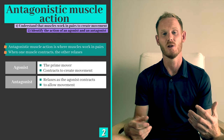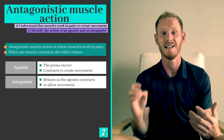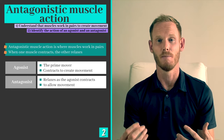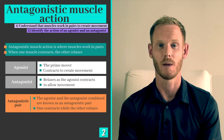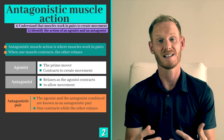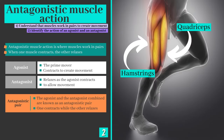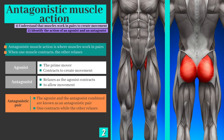Each muscle in a pair is named depending on its role at any given moment. The agonist or prime mover is the muscle that contracts to create movement — this is the one doing the work. Meanwhile the antagonist relaxes so that its length can increase and movement can occur at the joint. The agonist and antagonist combined are known as an antagonistic pair. Antagonistic pairs sit back to back or opposite one another, such as the biceps and triceps, hamstrings and quadriceps, and hip flexors and gluteals.